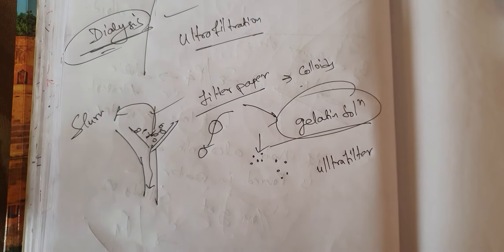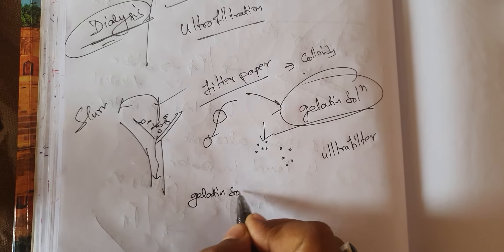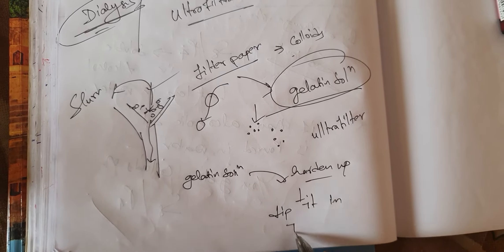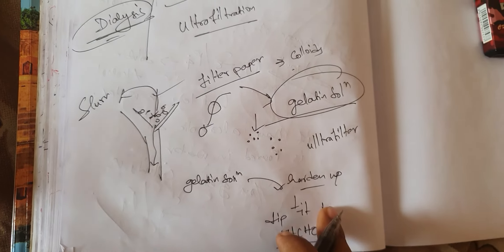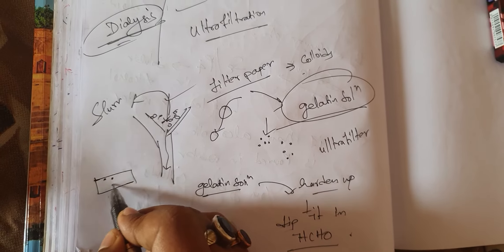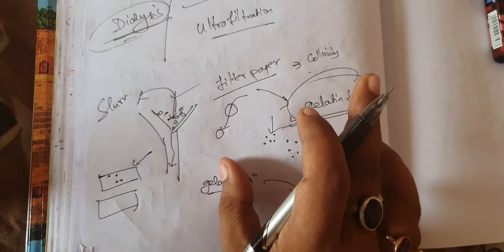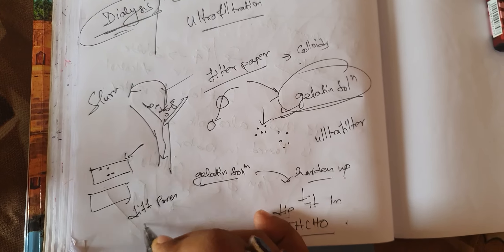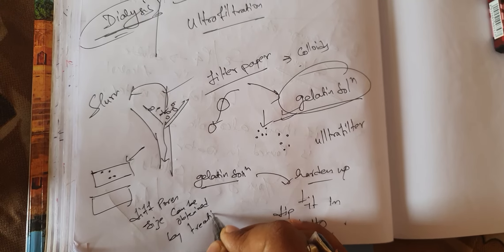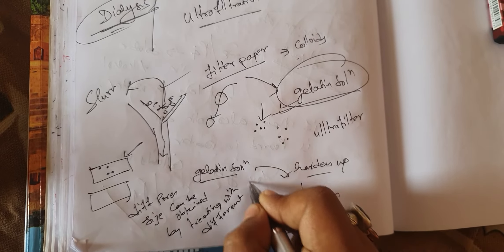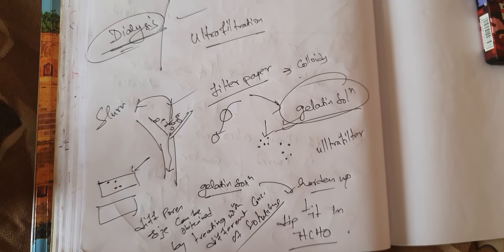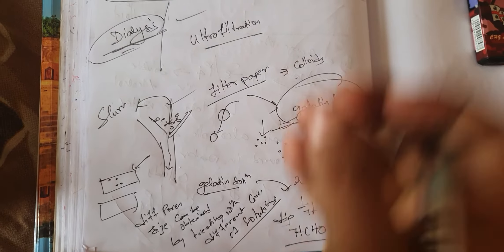The filter paper obtained by shrinking its pores by treating with gelatin solution is known as an ultra filter, and the process is known as ultra filtration. Treating with gelatin solution alone is not enough — you also have to dip the filter paper in formaldehyde to harden it. You can create filter paper of different pore sizes by treating with gelatin solutions of different concentrations.